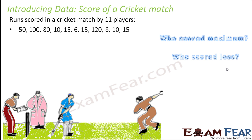What are you actually understanding about data from these examples? Data is nothing but these numbers on the screen. In the first example, data was the attendance of the class on different days. In the cricket example, data is the runs scored by the 11 players. So data is essentially a collection of numbers — though let me give you some more examples to clarify further.